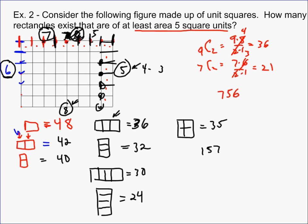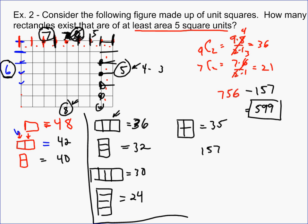So if I subtract that away, that leaves 756 minus 157, which equals 599 rectangles that must have area of 5 or more. We took out all the ones with area 4 or less, so everything left must have area 5 or more. So there are 599 such rectangles. Those are two different applications of using combinations to figure things out, along with some basic counting principles.